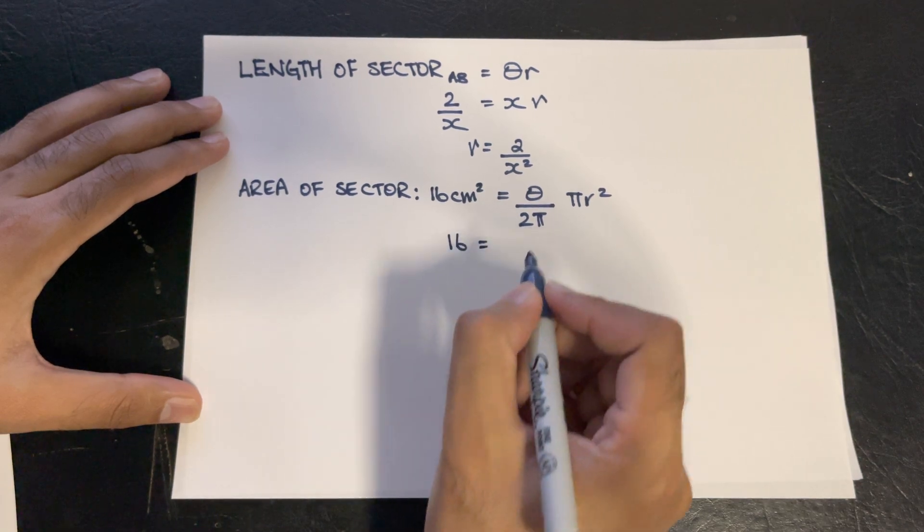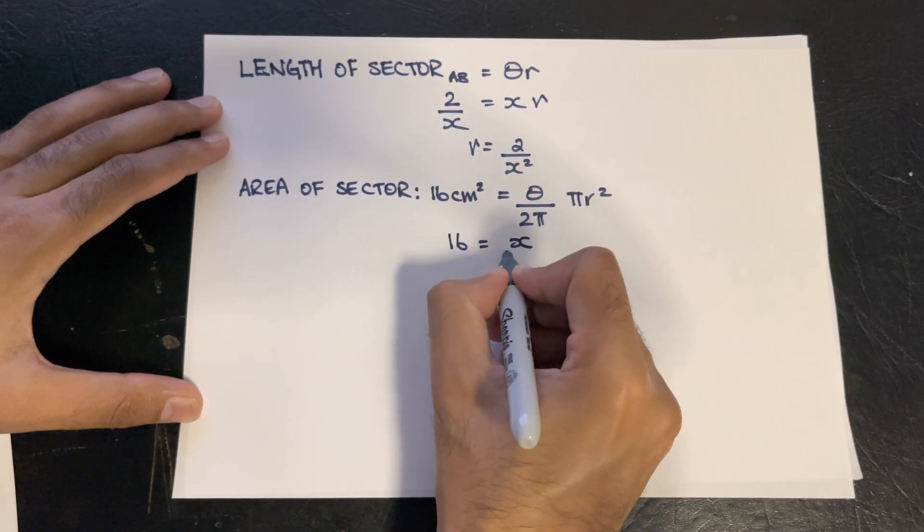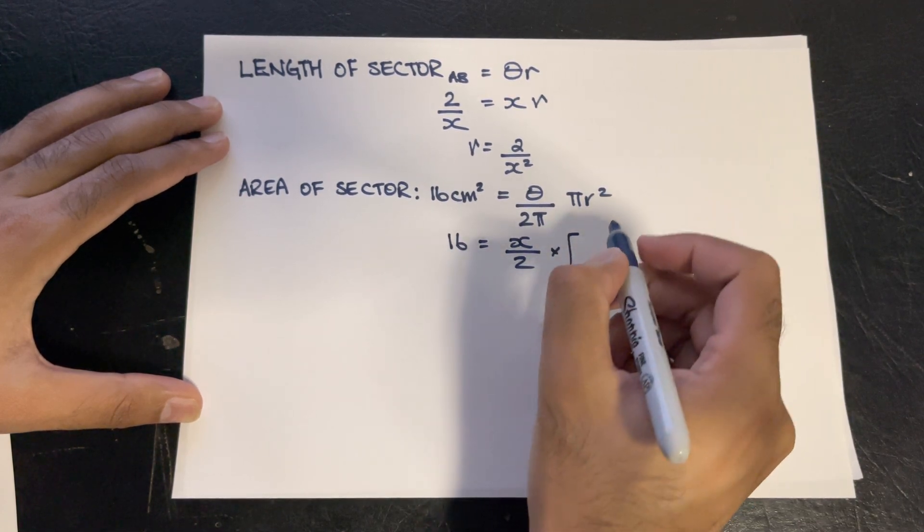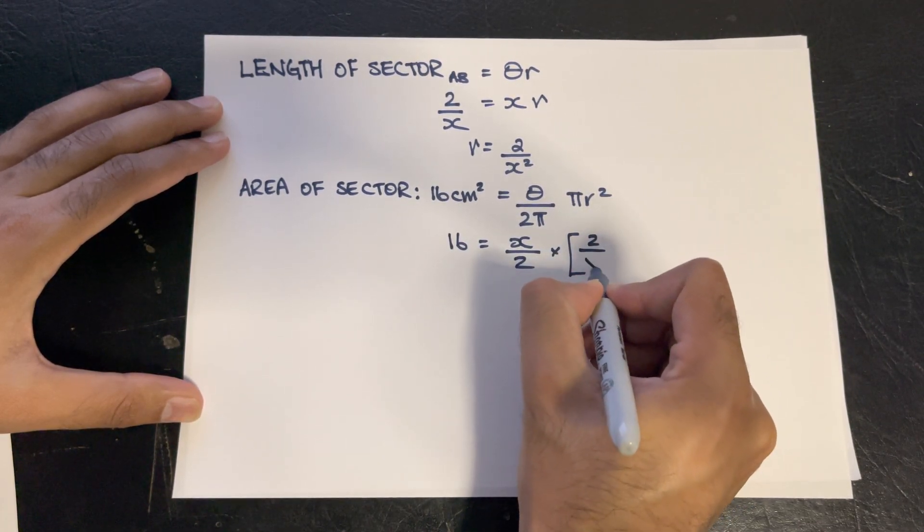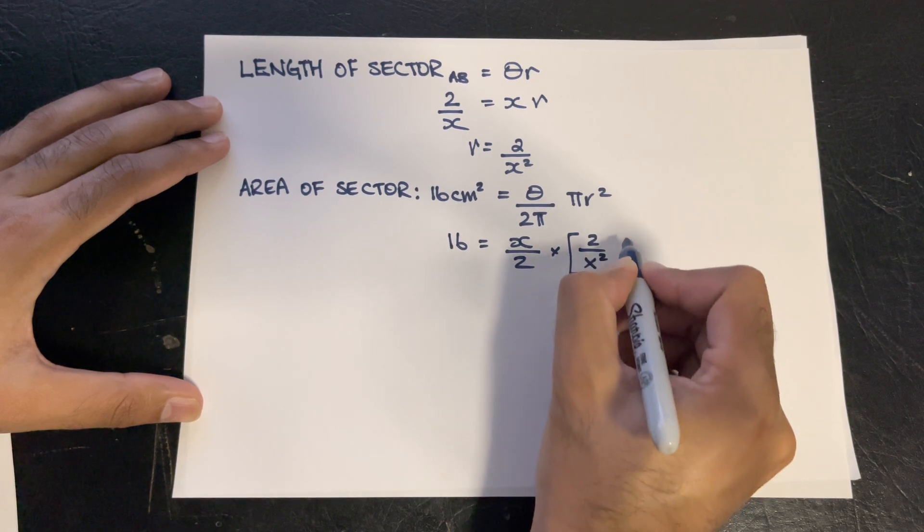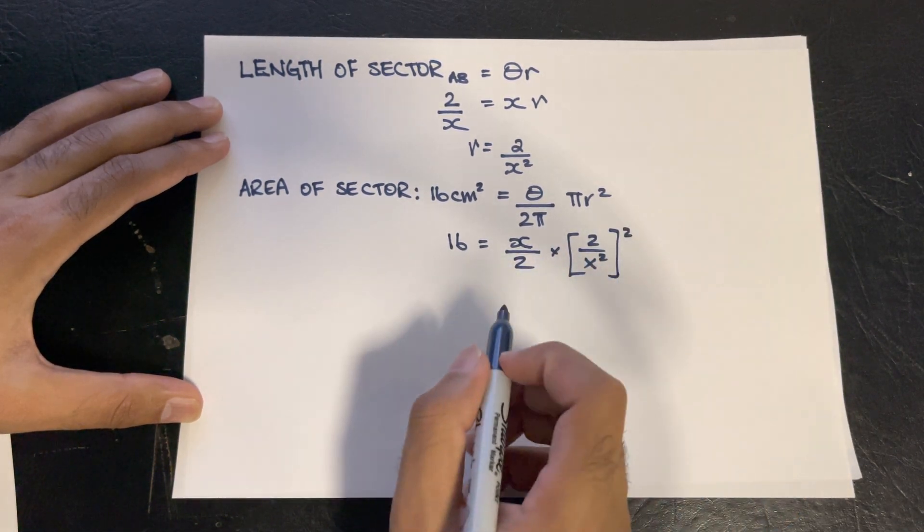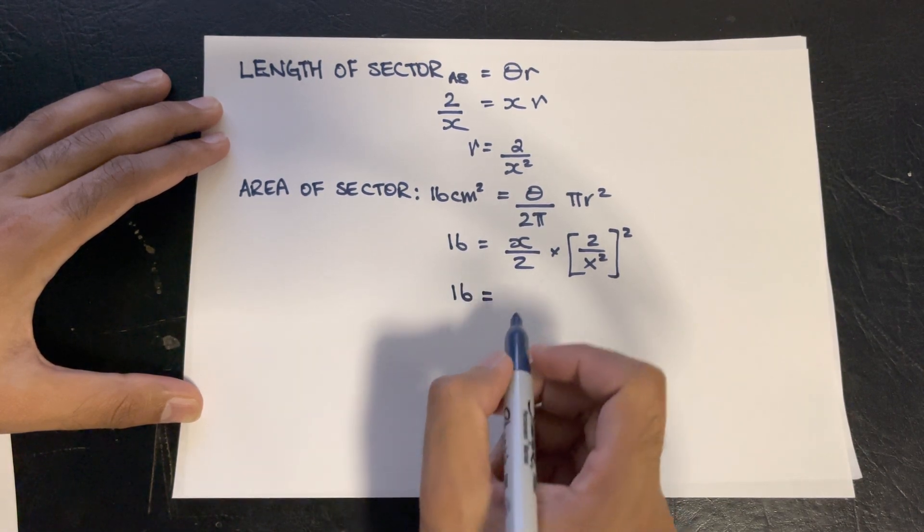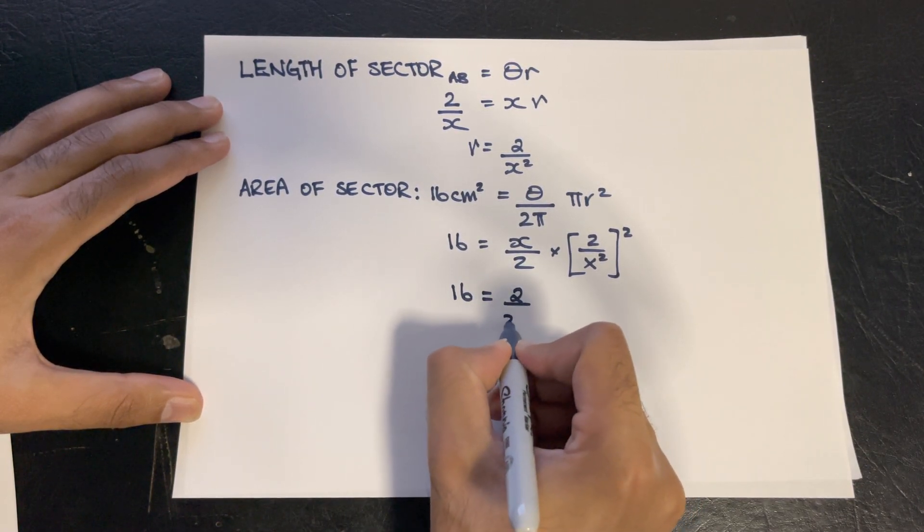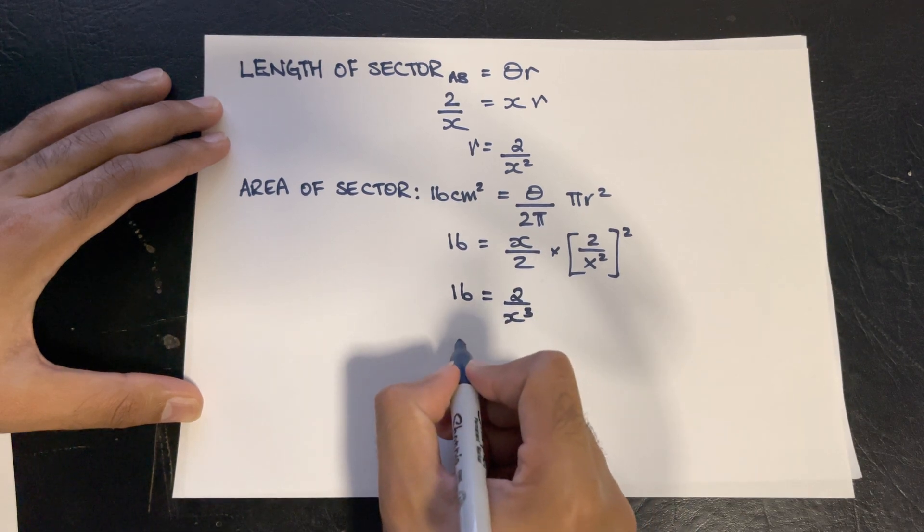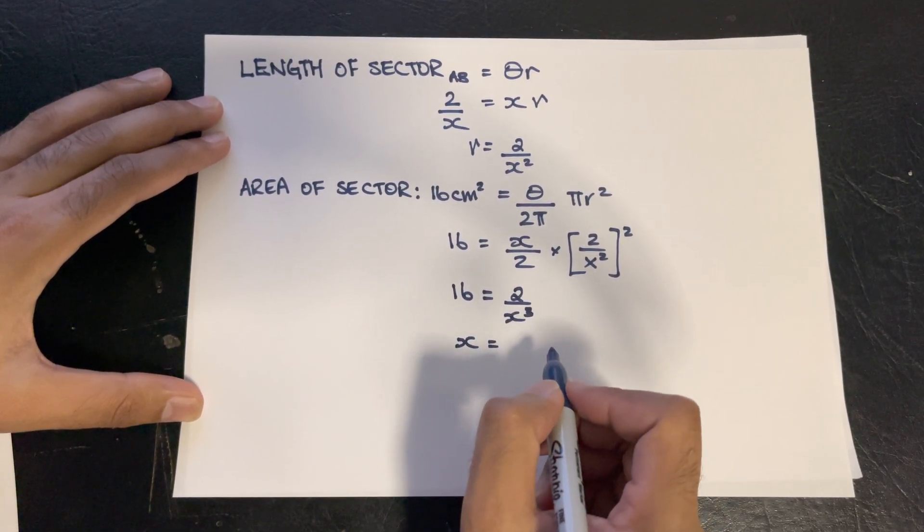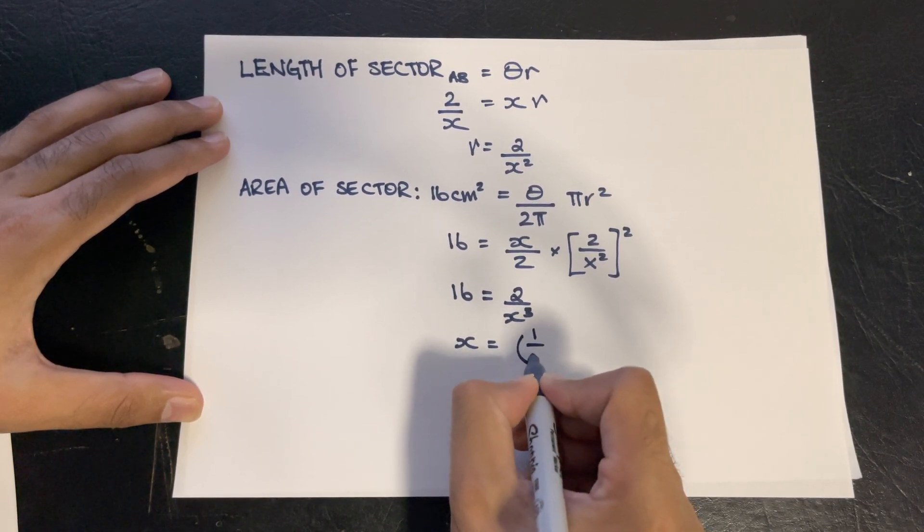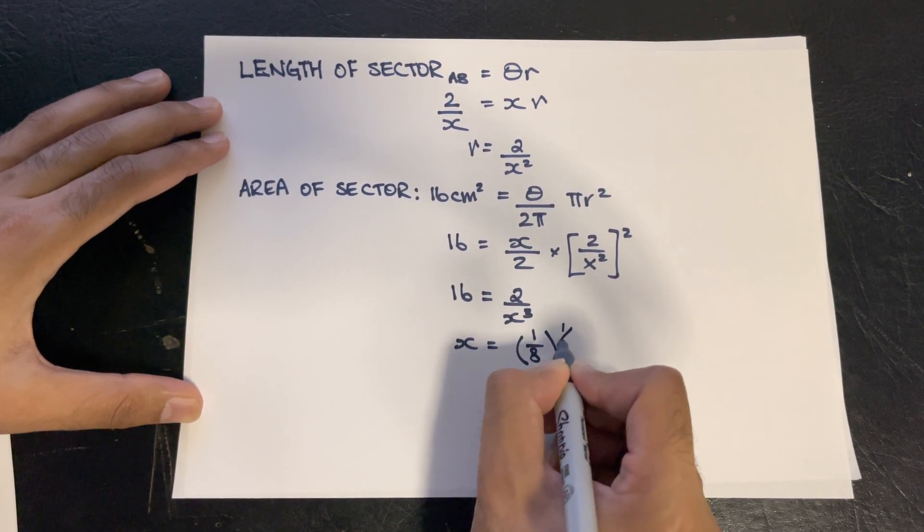So 16 will equal x over 2, and that's being multiplied by the radius of 2 over x squared, all squared, and that can simplify down to 2 over x cubed. X being equal to 1 over 8, and that's the cube root.